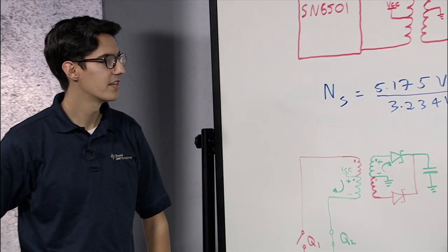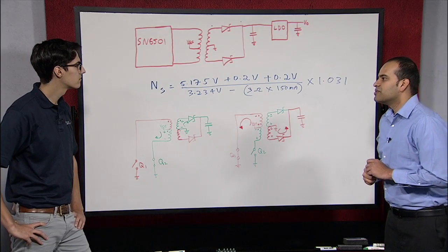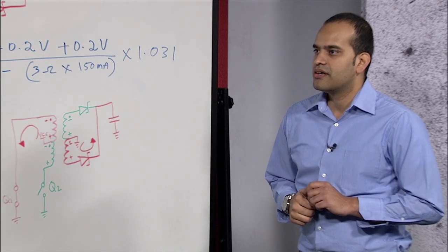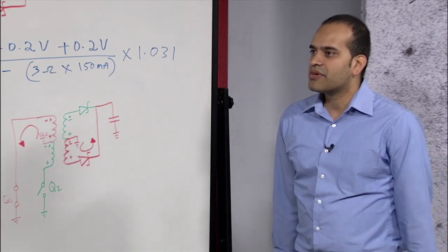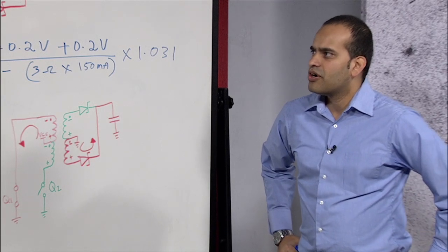Awesome. Is there anything else we need to consider? Yes. Now we need to look into the volt microsecond product. This helps us in determining the size of the transformer. Do you know what is the maximum on time of the output transistor?